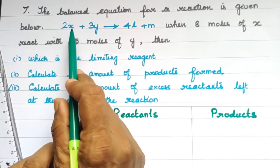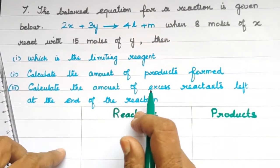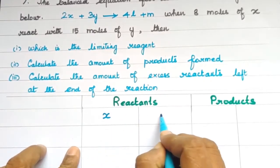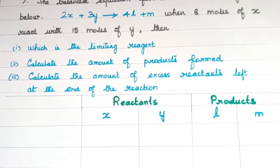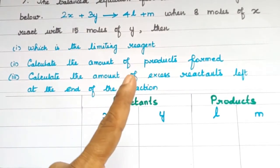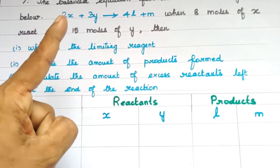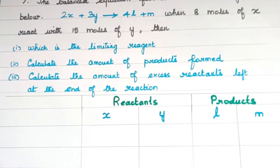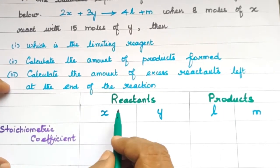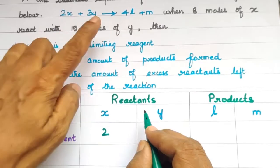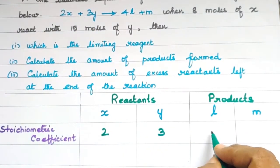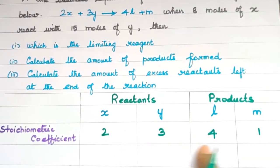Reactants are X and Y; products are L and M. Now, 5 steps — step 1: stoichiometric coefficients. From the balanced equation, the stoichiometric coefficient of X is 2, Y is 3, L is 4, and M is 1. These are the coefficients of the balanced chemical equation.